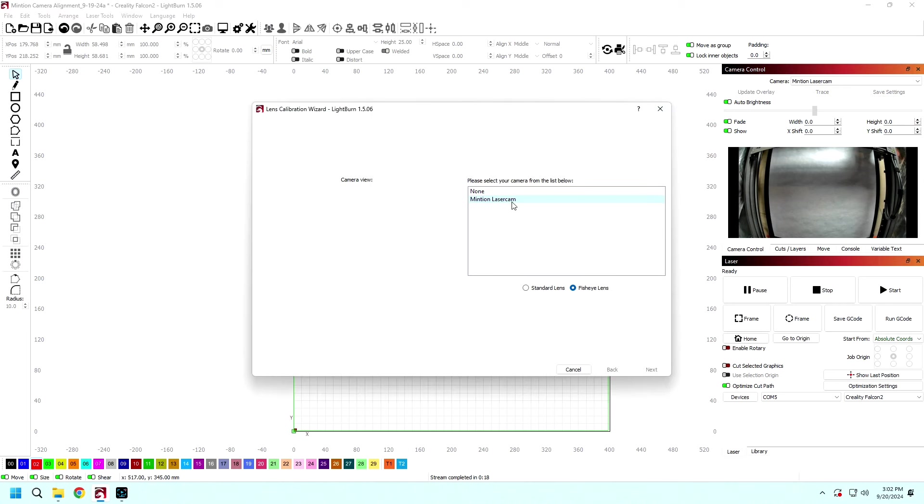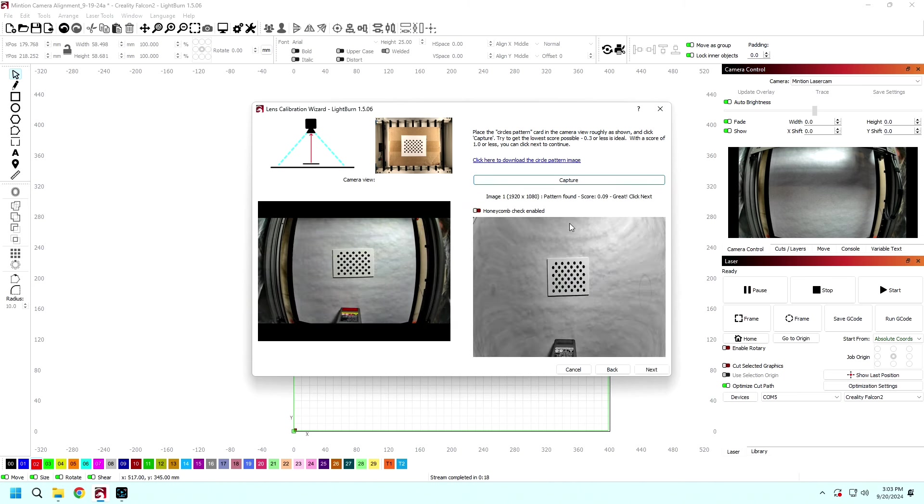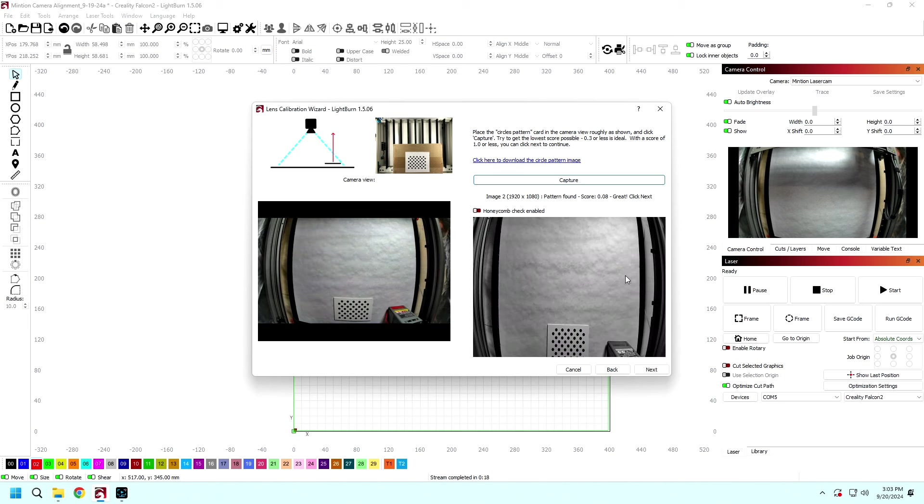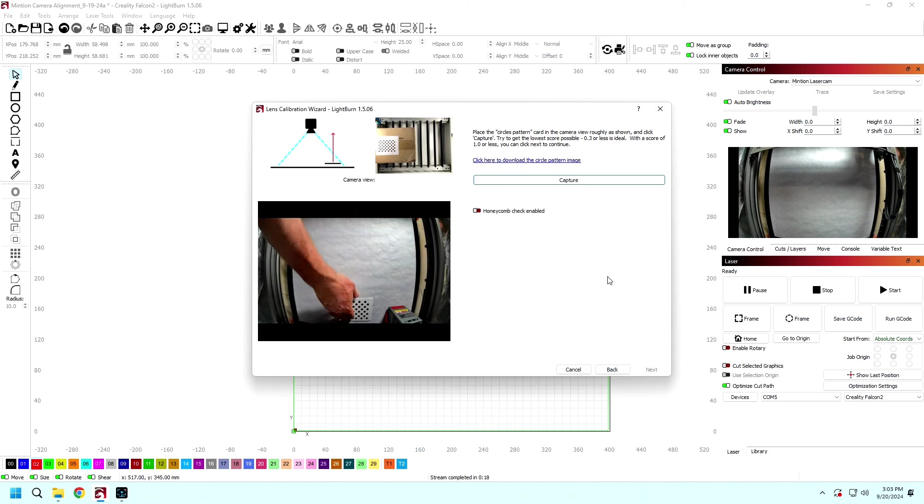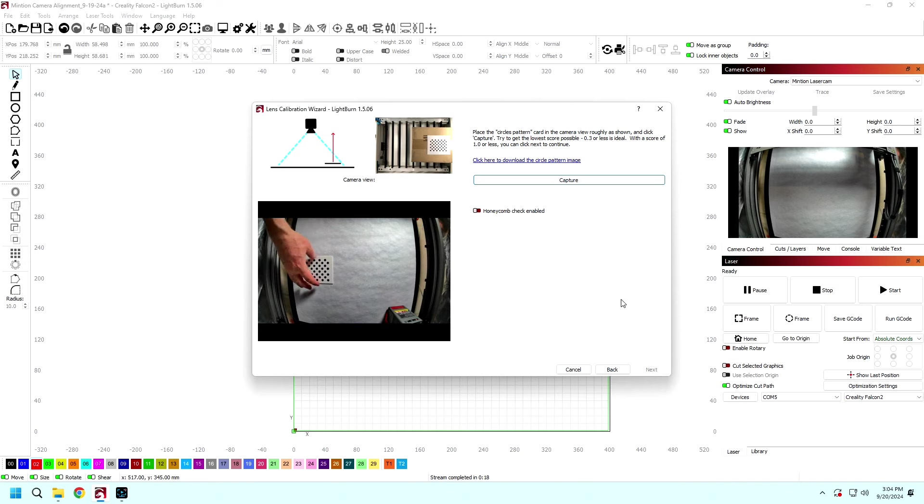Next, go to Camera Control and choose the Minchian Laser Cam. Then click on Calibrate Camera Lens. Take the Circles Dot Pattern card and place it in the middle of your work area. I turned off the Honeycomb Check Enable button and then I clicked Capture. With a score of one or less, then click Next to continue. Repeat the process until you've captured four sides and four corners of your work area. Once you're finished, it's time to align the camera.